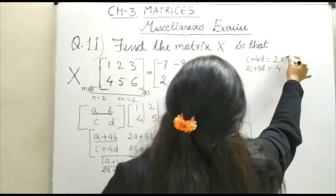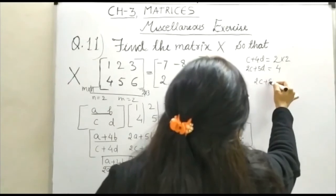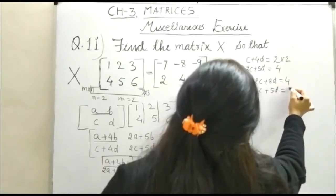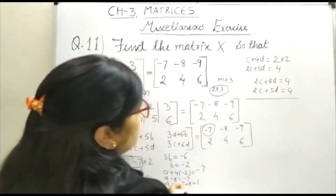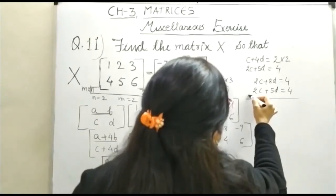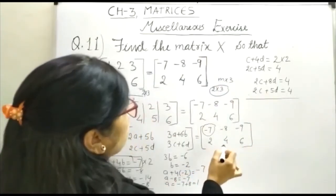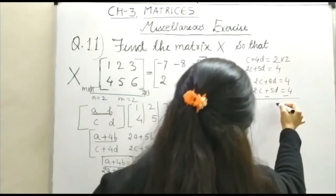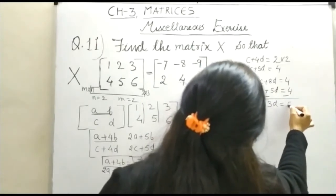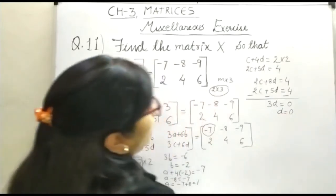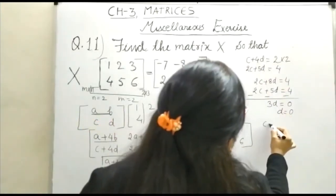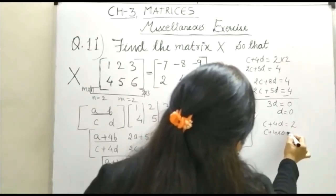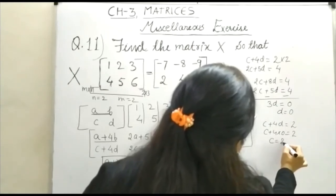Same thing you have to do. Multiply this equation by 2. You will be getting 2C plus 8D is equal to 4. 2C plus 5D is equal to 4. You got this term as cancelled here. It is 2 and this here 4. So this will be minus, again minus and minus. So 3D is equal to 0. So 3D is equal to 0 and the value of D is here 0. Keep the value of D here 0. So C plus 4D is equal to 2. C plus 4 into 0 is equal to 0 is equal to 2 and your C is equal to 2.